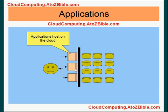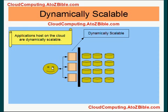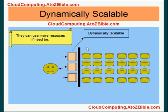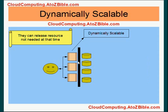This is the user — the user doesn't need to know what is lying underneath that cloud, only sees the applications. All these details are hidden from the user. Applications hosted on the cloud are dynamically scalable, which means if these applications need more resources, those will be granted to them.